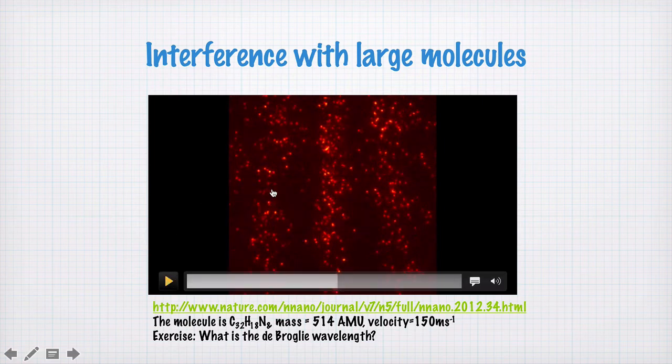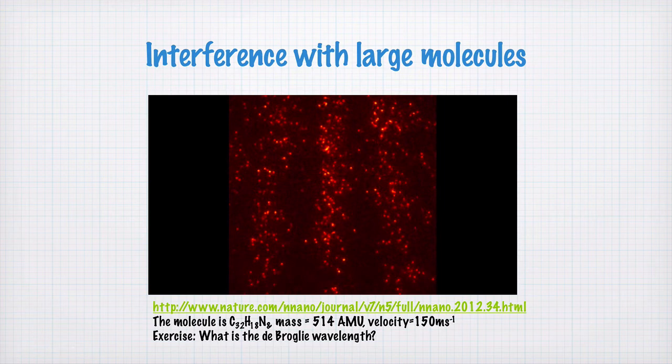And so again, we see this classic double-slit interference pattern, places where you see lots of molecules and places where you see no molecules, because each molecule, as it passes through the plates, interferes with itself, and then you have an interference pattern.